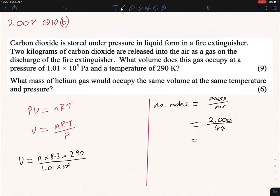So therefore it's 2000 grams divided by 44, and you're going to get 45.5 moles of CO2.